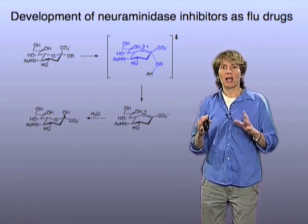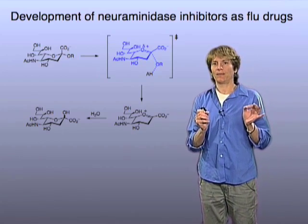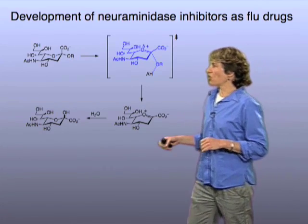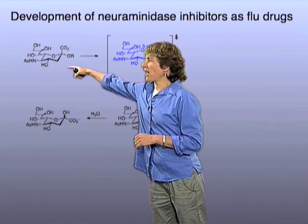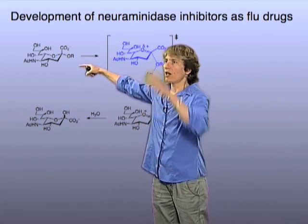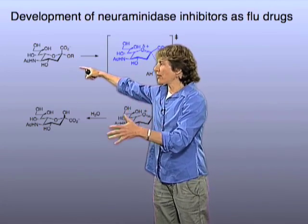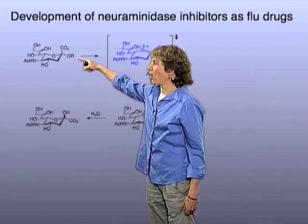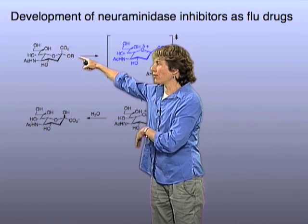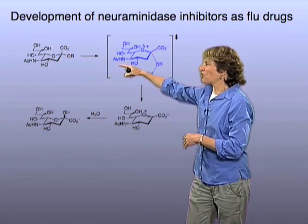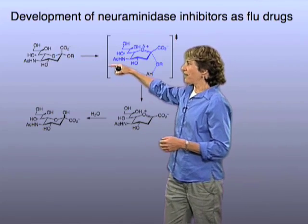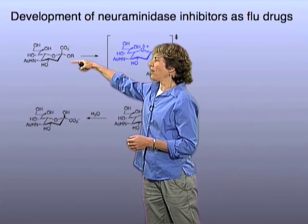That was done by understanding the mechanism of that enzymatic reaction. The mechanism is shown here. Here's a sialic acid — picture it bound to the surface of a cell through a glycan on a glycoprotein or a glycolipid. The R group is the rest of the glycan or the rest of the glycoprotein. What happens during the neuraminidase-catalyzed reaction is that there's a cleavage of the bond right here,